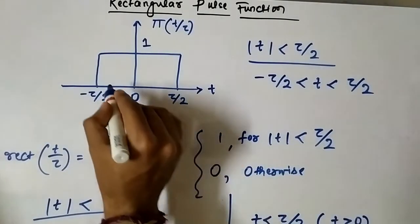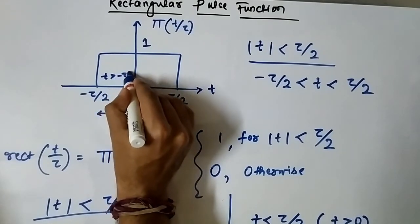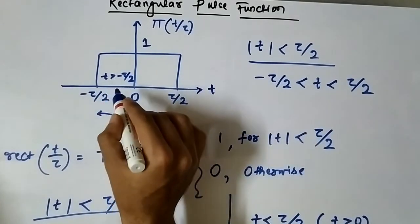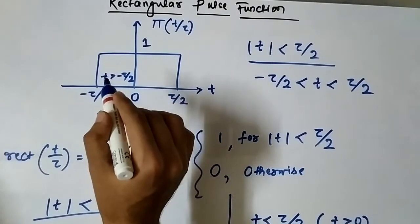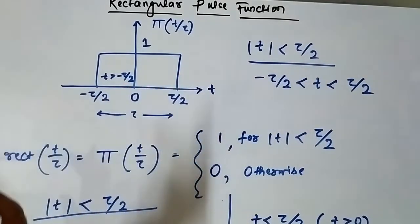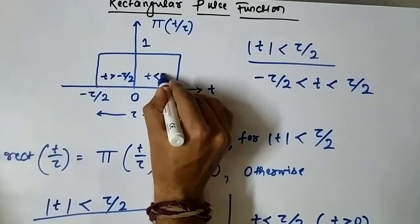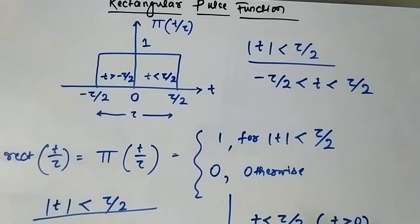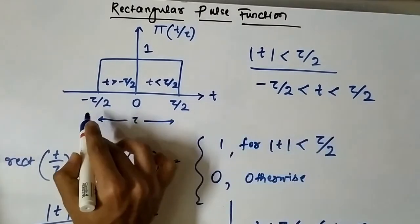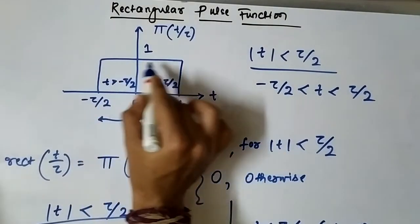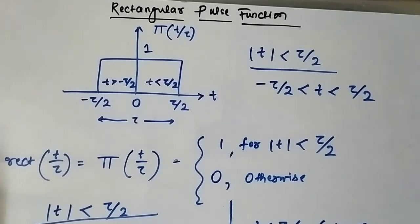In this portion, t is greater than minus tau by 2 — in the sense that, for example, minus 1 is greater than minus 3. And in this portion, t is lesser than tau by 2. For t less than 0, minus t is greater than minus tau by 2, and for t greater than 0, t is less than tau by 2. For that entire width from minus tau by 2 to tau by 2, the value of the rectangular pulse function is equal to 1.